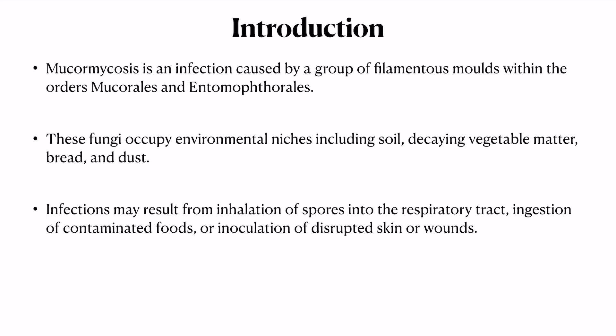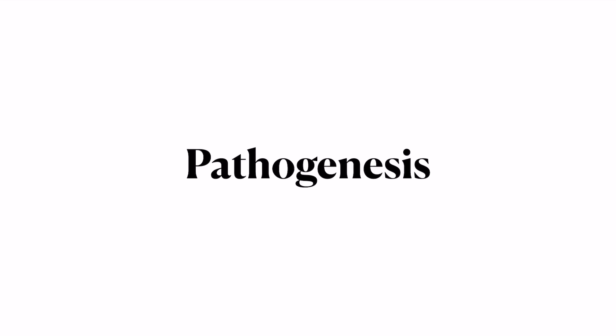Mucormycosis is an infection caused by a group of filamentous fungi within the order Mucorales and Entomophthorales. These two classes of fungi produce this type of infection in humans. They occupy environmental niches like soil, decaying vegetable matter, bread, and dust — so they are present all around us and are not newly discovered. Infection results when spores enter the respiratory tract, are ingested in contaminated food, or are inoculated into the skin through wounds.